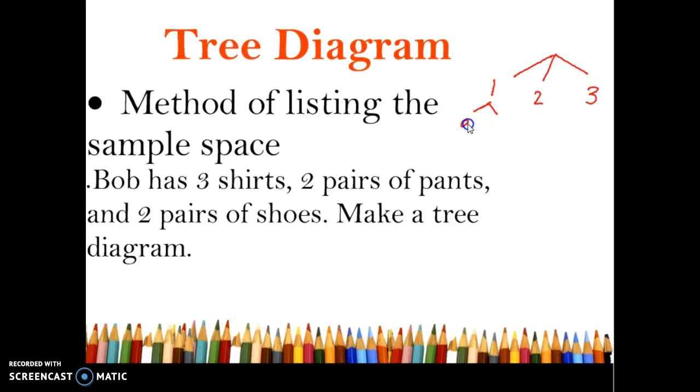We can call those maybe A and B and then once he has the pants he's got two pairs of shoes. Maybe we'll call those P and Q and each pair of pants gets those. So this last branch of our tree diagram is all the possible outcomes. You can kind of read it going up if he chooses P shoes with A pants and number one shirt, that's one possible outfit. Then you've got Q shoes with A pants and one shirt.